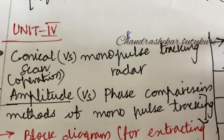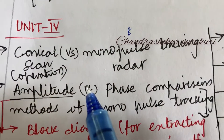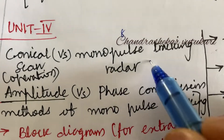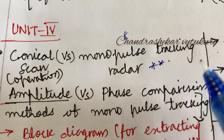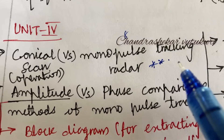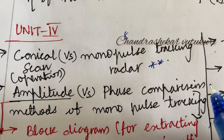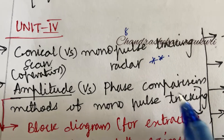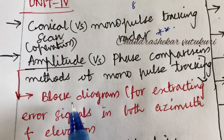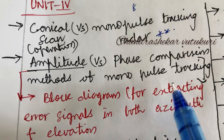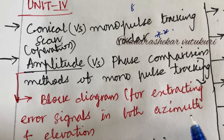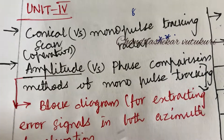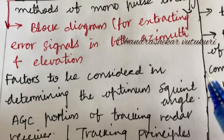The 8th and 9th questions are all about conical scan and their operation, and the differences among monopulse tracking radar. Related to monopulse radar, you are going to get one question for sure this time — amplitude versus phase comparison, methods of non-monopulse tracking. Related to amplitude comparison, they will ask you to work out the block diagram for extracting error signals in both azimuth and elevation. Related to the phase diagram also, you need to work out the block diagram.